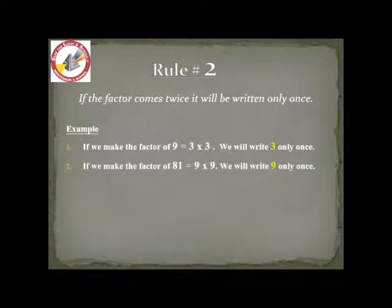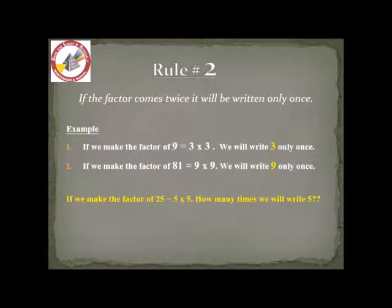if we make the factors of 81, 9 times 9 is 81, but we will write 9 only once. Now, here I want to ask you one question: if we make the factors of 25, you know that 5 times 5 is 25, but how many times we will write 5? Yes, we will write 5 only once.